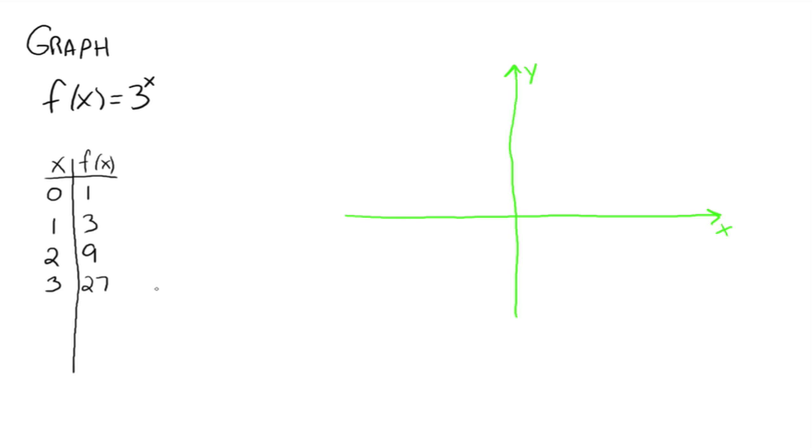Notice your y values are starting to get really large really fast. We're not going to want to plot 3, 27 over here, right? Much less when x is 4, y is 81. We don't want to plot that. So what about negative 1? When x is negative 1, 3 to the negative 1 would be, everybody remember? 1 third.